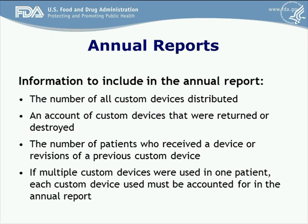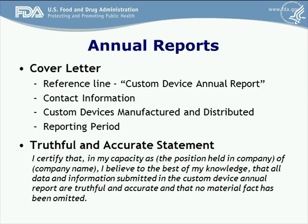Information that should be included in the annual report includes: the number of all custom devices distributed, an account of custom devices that were returned or destroyed, and the number of patients who received the device or revisions of a previous custom device. If multiple custom devices were used in one patient, each must be accounted for. A cover letter should accompany the annual report containing a reference line stating 'custom device annual report,' contact information, the number of custom devices manufactured and distributed, and the reporting period. The annual report must also contain a truthful and accurate statement using the language provided in Appendix 2 of the guidance.